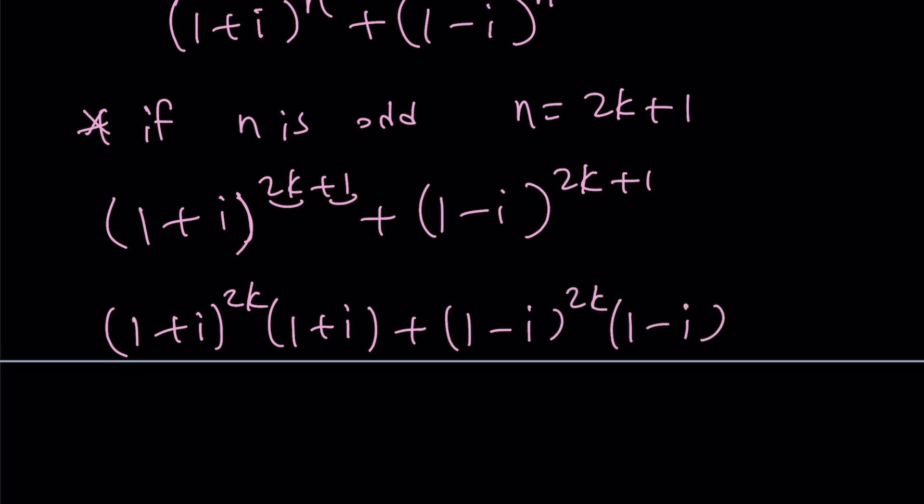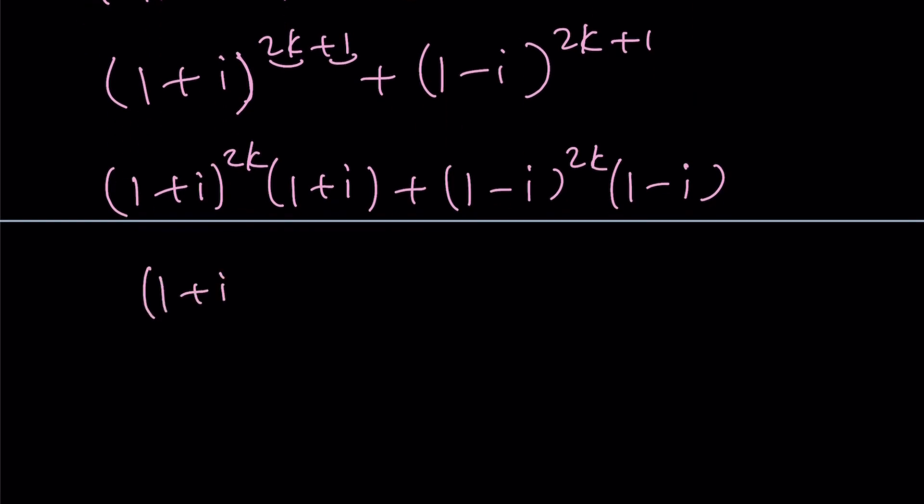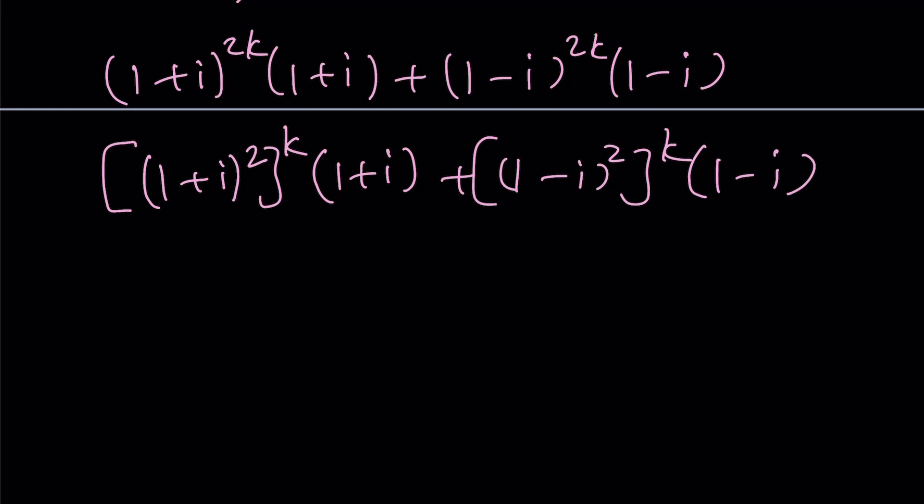Right? Now, 1 plus i to the 2k basically means, because we know what 1 plus i squared is, right? So, we can kind of write it as 1 plus i squared to the power k multiplied by 1 plus i. And then, the same thing for this, 1 minus i squared to the power k, and then multiply by 1 minus i. Okay. We're almost there. Now, 1 plus i squared, remember that is 2i. So, this is 2i to the k times 1 plus i. And this is negative 2i to the k times 1 minus i. Now, are these two the same? No. Depends. Okay. That's a good question.